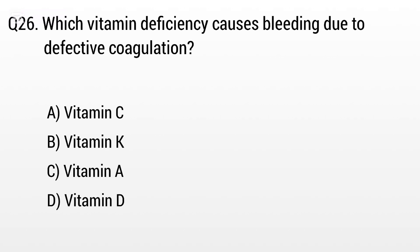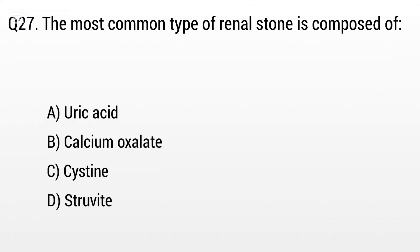Question 26. Which vitamin deficiency causes bleeding due to defective coagulation? Option A: Vitamin C, B: Vitamin K, C: Vitamin A, D: Vitamin D. But the right answer is Option B: Vitamin K.